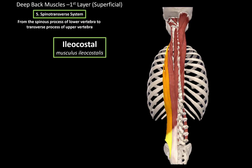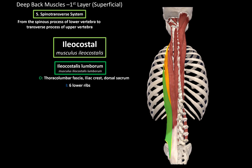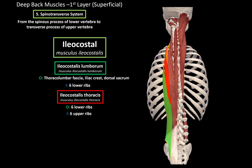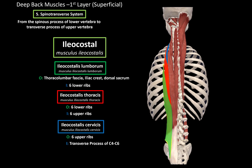The last muscle is the iliocostalis, with three parts based on location. The iliocostalis lumborum originates at the thoracolumbar fascia, the iliac crest, and the dorsal sacrum, and inserts at the 6 lower ribs. The iliocostalis thoracis originates at the 6 lower ribs and inserts at the 6 upper ribs. The iliocostalis cervicis originates at the 6 upper ribs and inserts at the transverse processes of C4 to C6.